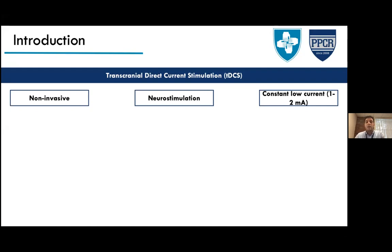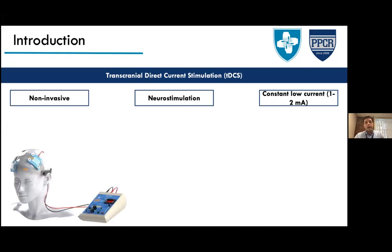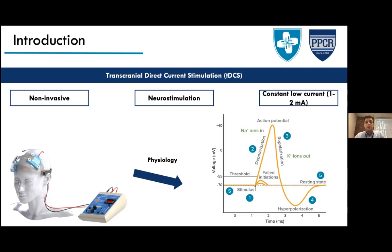tDCS is a non-invasive brain stimulation technique that delivers a constant low current between 1 and 2 milliamperes through the brain. The common tDCS setup, as shown in the picture, involves stimulating the primary motor cortex (M1). One electrode — the stimulation electrode — goes to the motor cortex, and the other — the reference electrode — goes to the contralateral supraorbital area.